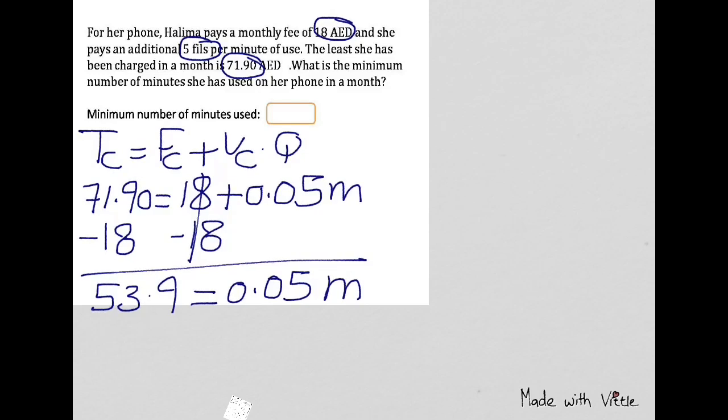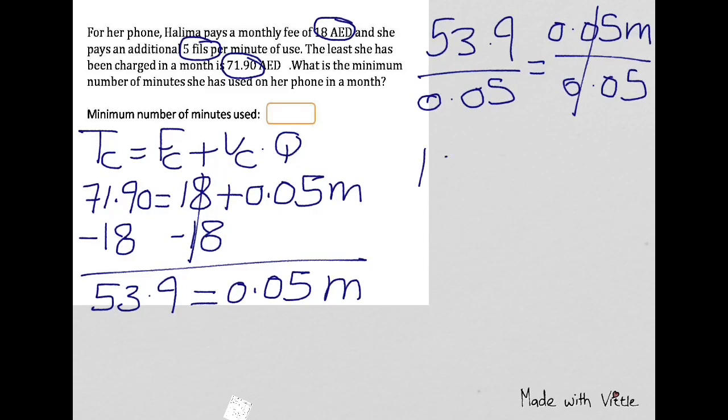Step 2: Divide both sides by 0.05. 53.9 divided by 0.05 equals 0.05 M divided by 0.05. 53.9 divided by 0.05 is equal to 1078 minutes.